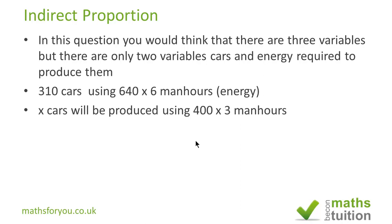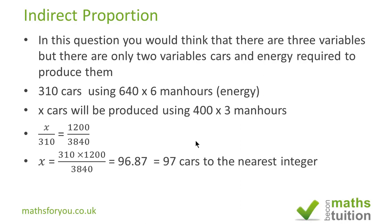Now if you take ratios, x over 310 is equal to 1200 — because that's what you get when you multiply 400 by 3 — divided by 3840, which is what you get when you multiply 640 by 6. Cross-multiplying, you get x is equal to 310 times 1200 divided by 3840, and you get approximately 97 cars to the next integer.